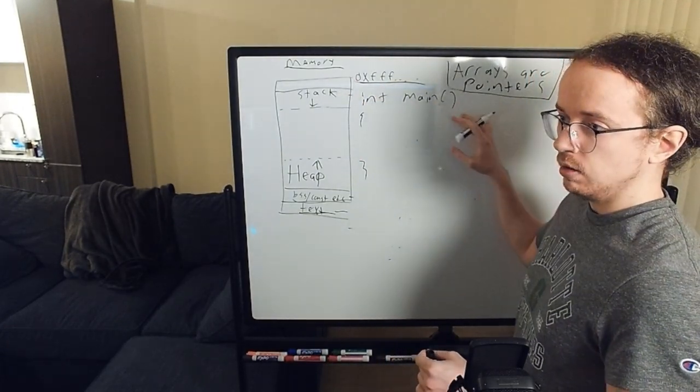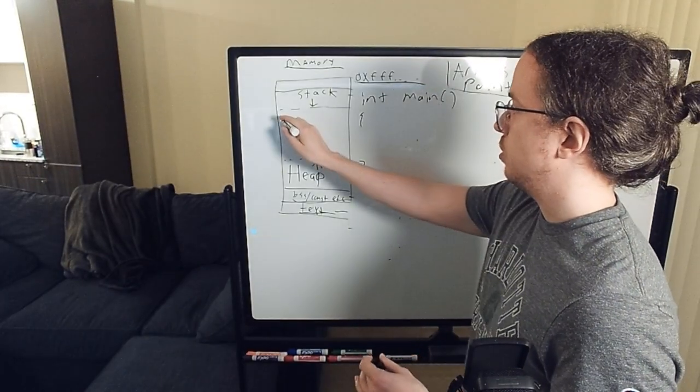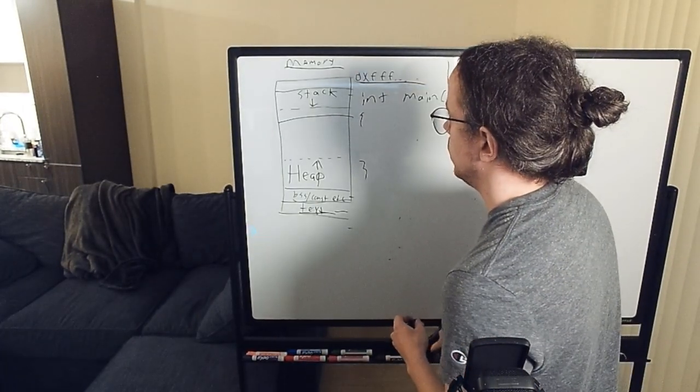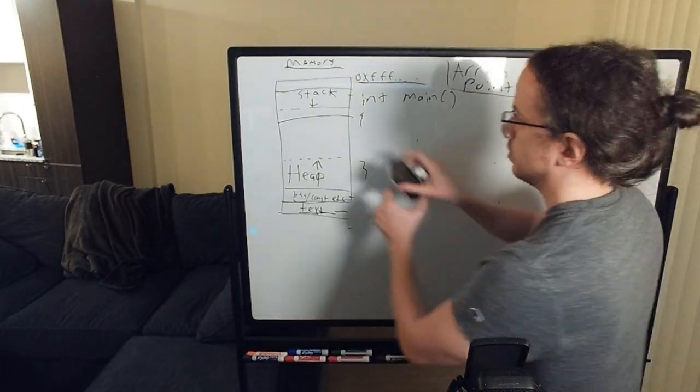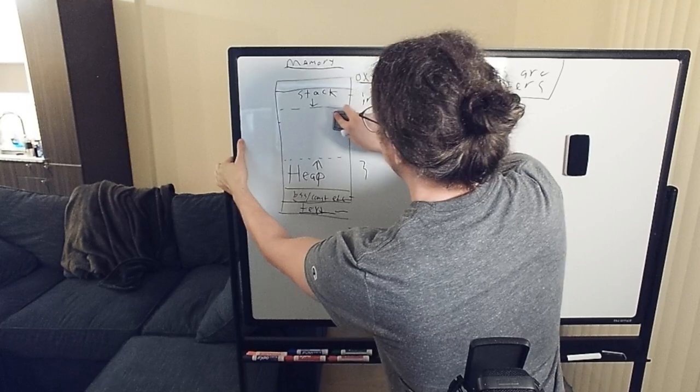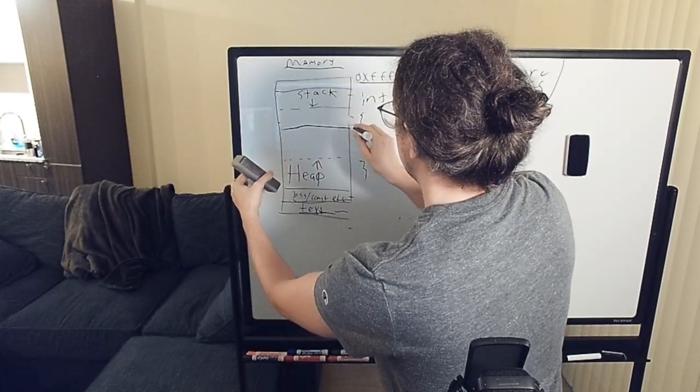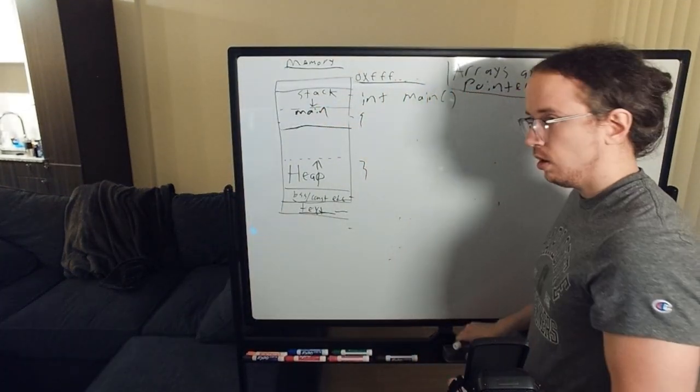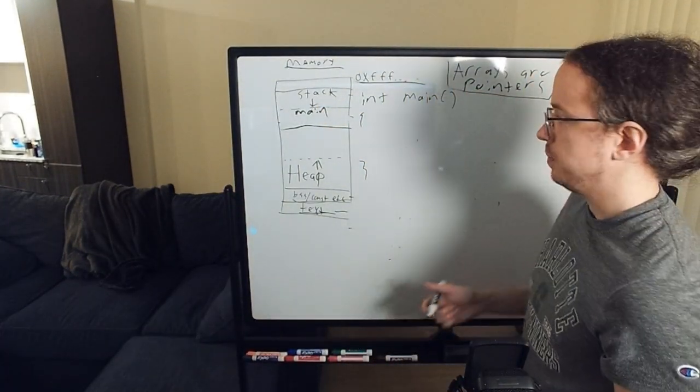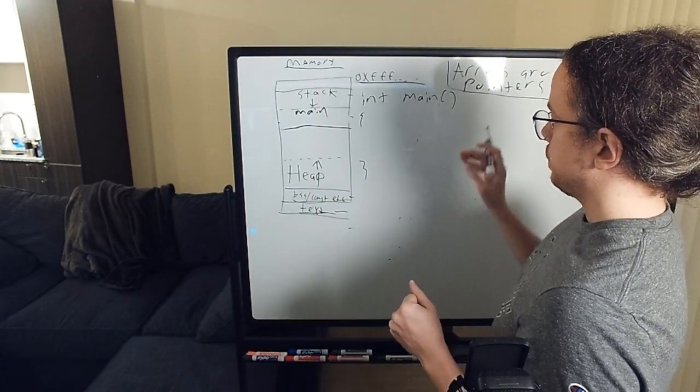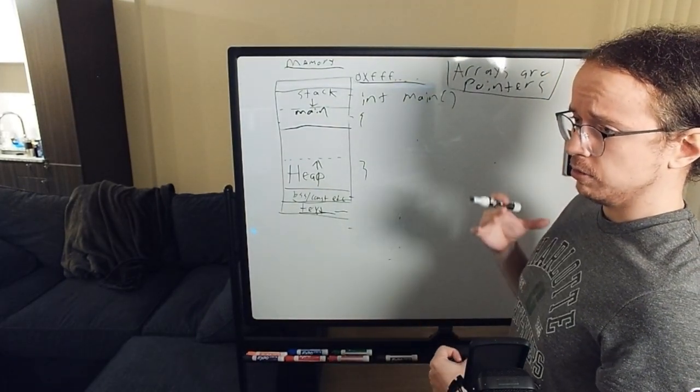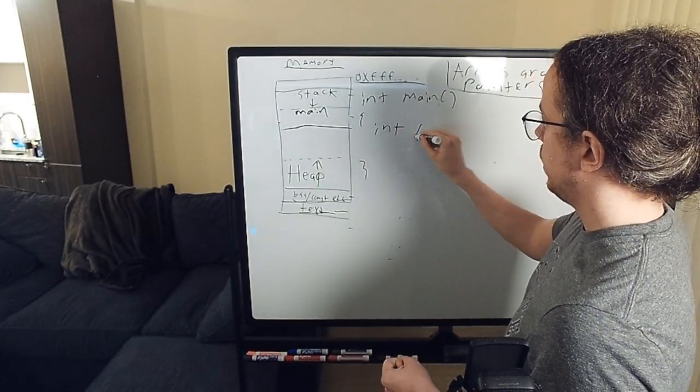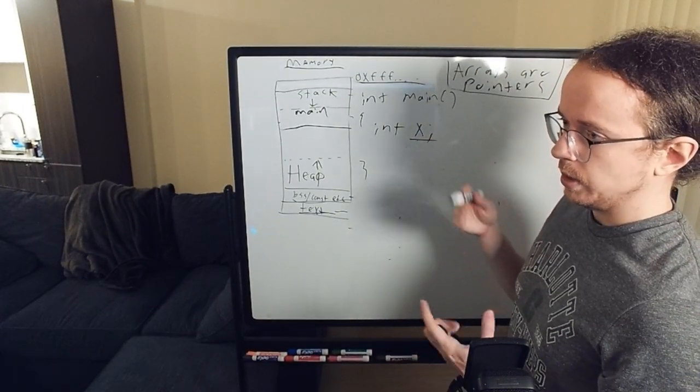Okay. So stack is memory. Each function call has memory. So we would draw what we call a stack frame. Let's draw that a little bit bigger because we're going to need some space here. We would have what we call a stack frame for main. So calling this function requires a little bit of memory.